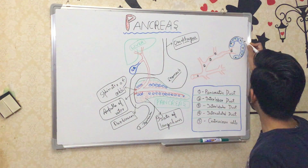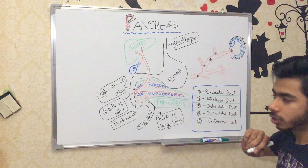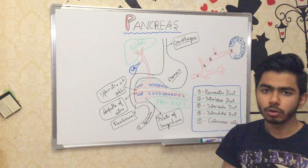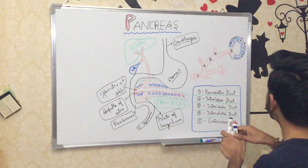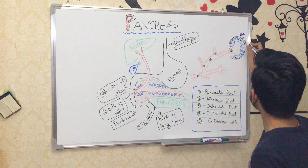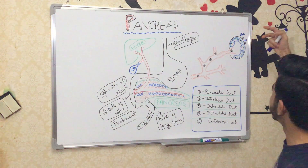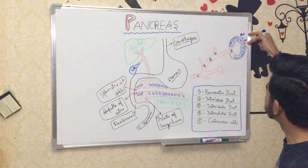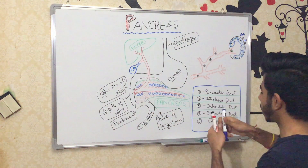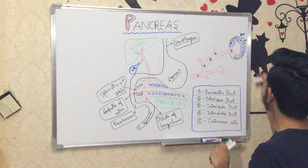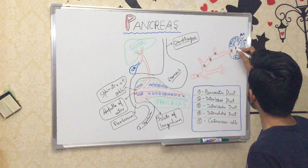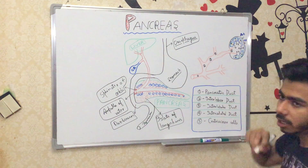The acinar cells have some receptors that are very sensitive to acetylcholine and cholecystokinin (CCK). Whenever acetylcholine and cholecystokinin bind to these receptors, they stimulate the acinar cells. The acinar cells then start producing peptides and releasing enzymes into the lumen of the pancreas.